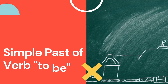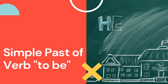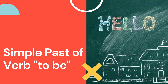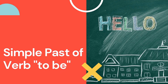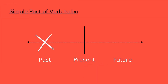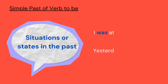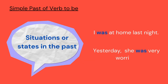Hello and welcome. My name is Diana Pena and in this video we will learn about the simple past of the verb to be. Verb tenses indicate when an action takes place. The simple past of the verb to be is used to talk about situations or states in the past.